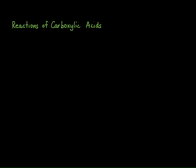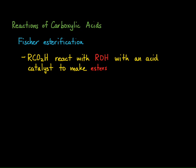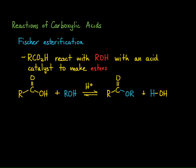This lecture we're going to talk about the reactions of carboxylic acids. The first reaction we're going to look at is Fischer Esterification. Fischer Esterification is when you take a carboxylic acid and react it with an alcohol in the presence of an acid, and this makes esters. The general reaction shows a generic carboxylic acid reacting with any type of alcohol in the presence of an acid to produce an ester and water as a byproduct.